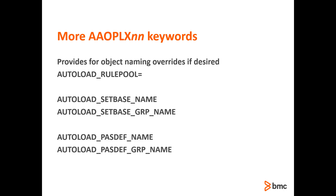This set of keywords controls how the objects that are loaded into the registry will be named. Again, the documentation in the AAOPLX00 member will provide more information as well as suggested values. All the keywords have default values so it may not be necessary to change anything if you like the defaults. After letting the Autoload tool load the registry, if you don't like the choices, it is very easy to change the AAOPLX00 member, delete and define the registry data set, and let the tool do its work again. The tool can load hundreds of rules in a matter of seconds, so it is easy to try different naming strategies.